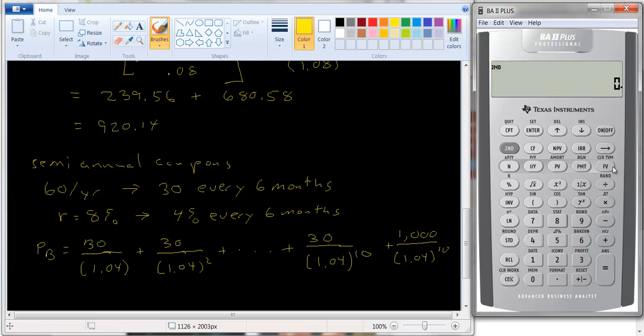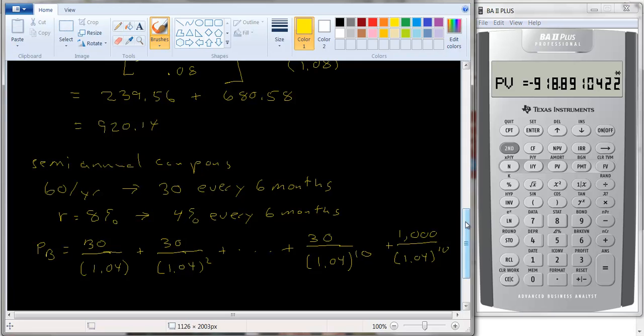So again, we could use the annuity formula to value this and then the present value formula to do this. Let's just use the calculator here. Let me clear my workspace. We know that the number of six-month periods is 10, two times the five years. The interest rate is 4%. The coupon is 30. And the maturity value is 1,000. And if we compute the price, we get 918.89. So pretty close, a little bit different, but pretty close to the 920.14 we had before.